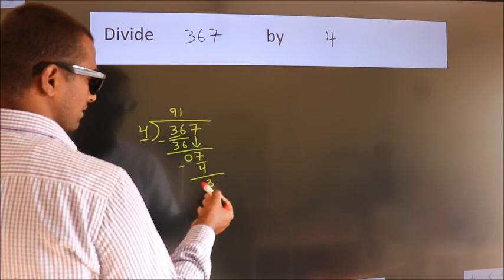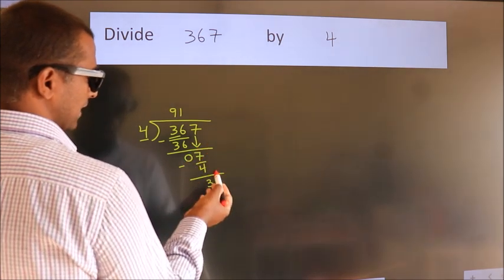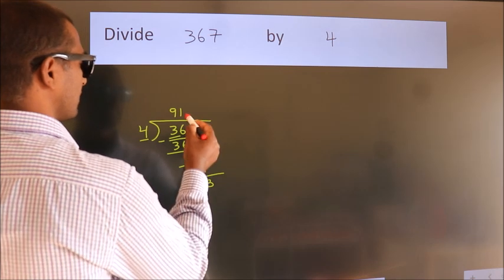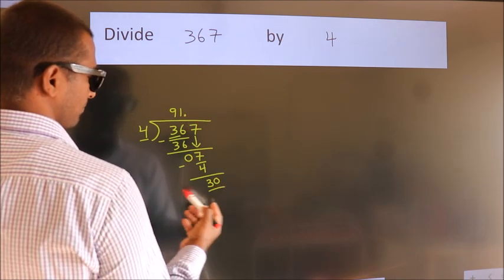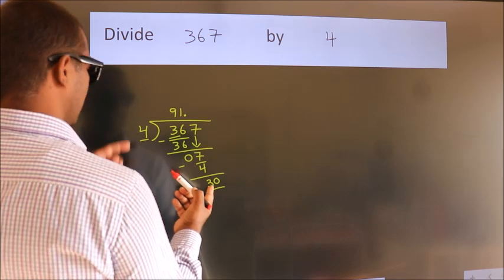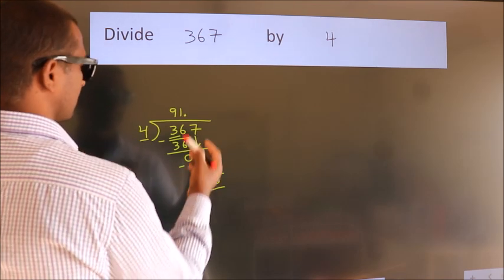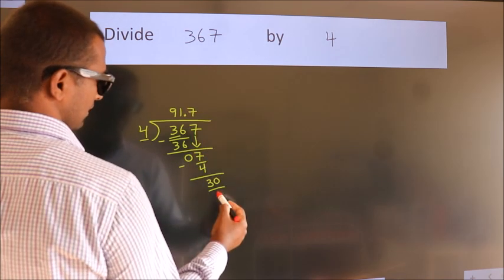After this, no more numbers to bring down. So what we do is, we put a dot and take 0. So, 30. A number close to 30 in the 4 table is 4 sevens, 28.